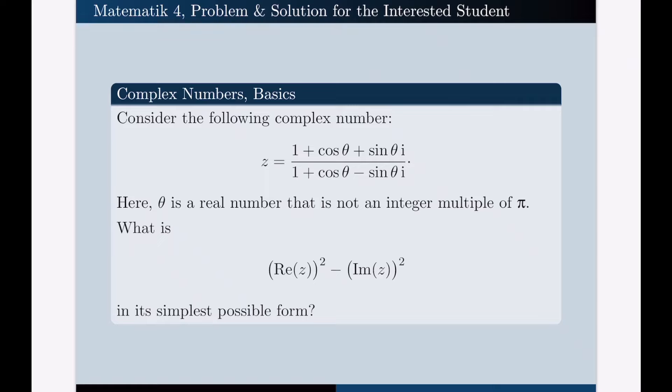Hello, in this video I'm going to solve the following problem for you. This is a problem on the topic of complex numbers basics. Let us read the problem together first. Consider the following complex number: z equals 1 plus cosine theta plus sine theta times i, all over 1 plus cosine theta minus sine theta times i. Here, theta is a real number that is not an integer multiple of pi.